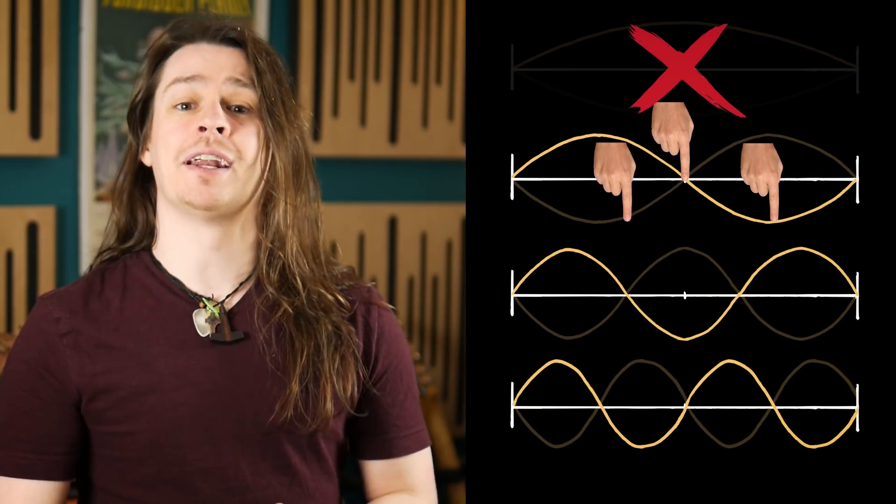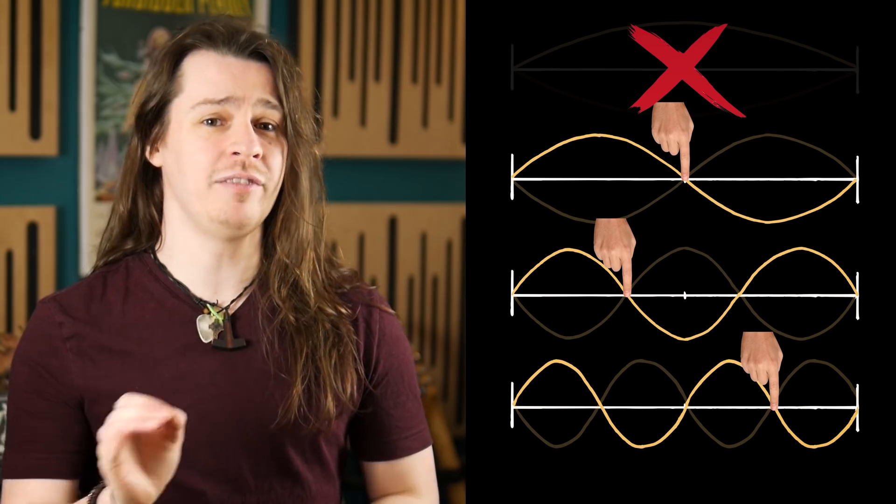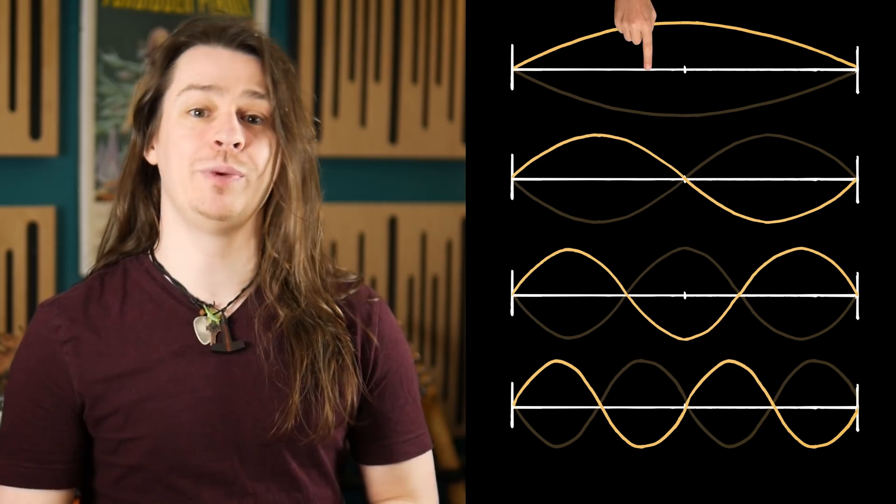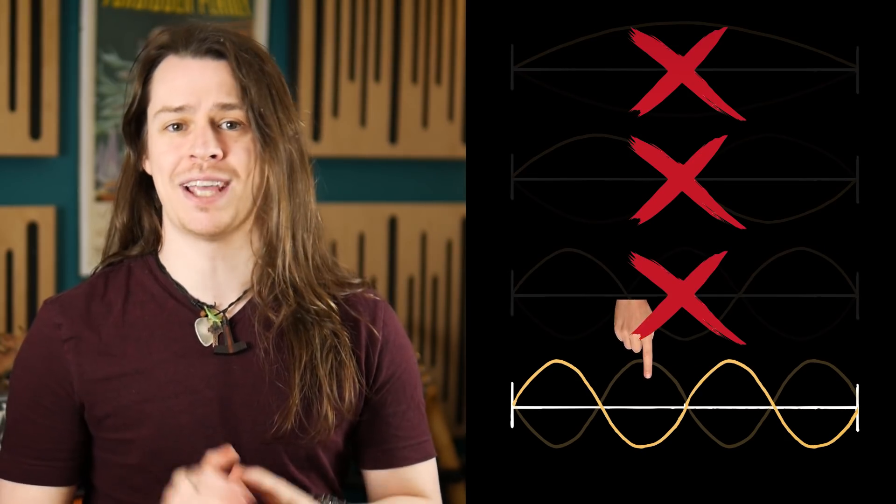To get back to why natural harmonics can only occur at very specific locations, let's consider an example where a string can only vibrate in certain modes. Placing a node point at any of these positions will result in a natural harmonic as there is at least one vibrational frequency with a matching node point. However, if we introduce a node point at a non-matching position, none of the vibrational modes have a matching node point, meaning the string cannot vibrate in any frequency and the note cannot sound.